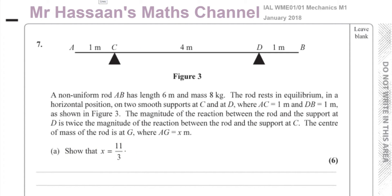We know this is a non-uniform rod, which means the mass is not evenly distributed through the whole shape, so it does not act at its geometric center. If it was a uniform rod, the center of mass would be exactly halfway along — three meters from the end for a six-meter rod. But since it's non-uniform, the center of mass G is somewhere other than the geometric center, at a distance x meters from A.